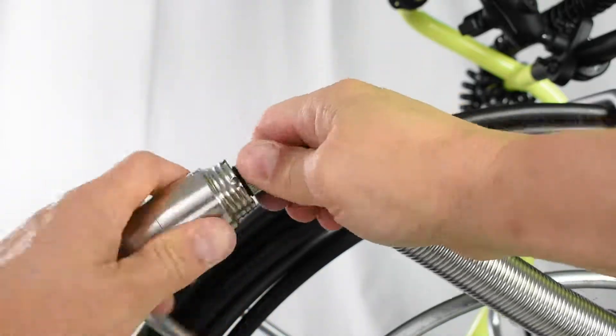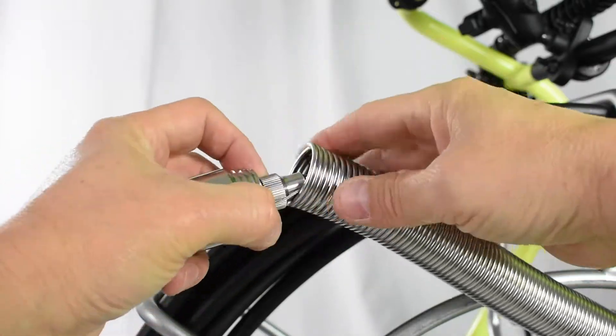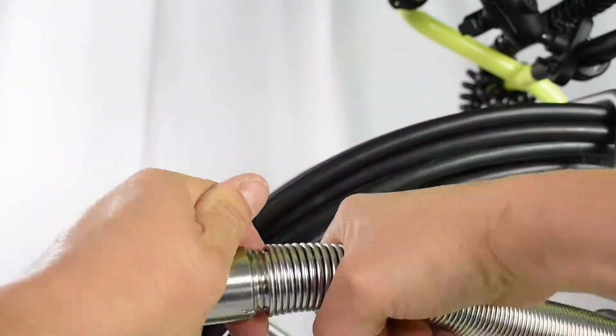Screw the bushing back on. Put the strain reliefs in the notches, holding them in place with your fingers as you screw the spring clockwise onto the camera head.